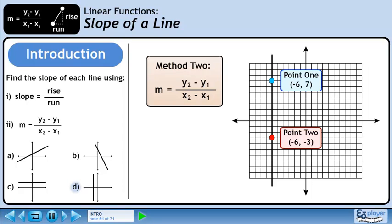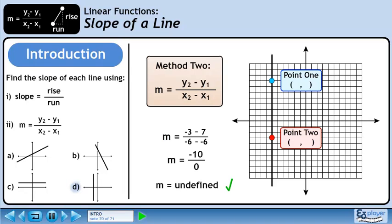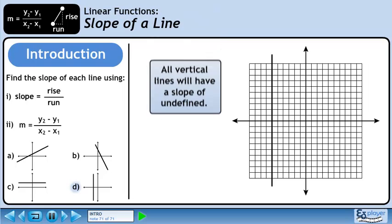We are not allowed to divide by 0, so minus 10 over 0 is undefined. Using the slope formula, plugging in the y and x values of both points gives us minus 10 over 0. The slope is undefined. We can generalize that all vertical lines have a slope that is undefined, so when you see a vertical line, you can say the slope is undefined without having to do any calculations.